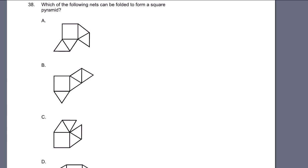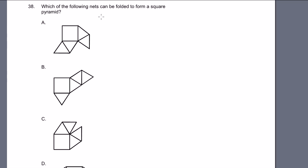Problem 38. Which of the following nets can be folded to form a square pyramid? A square pyramid is just a pyramid that has a square as its base, like the pyramids in Egypt. So it has a square as its base. Let's see if we can construct one.